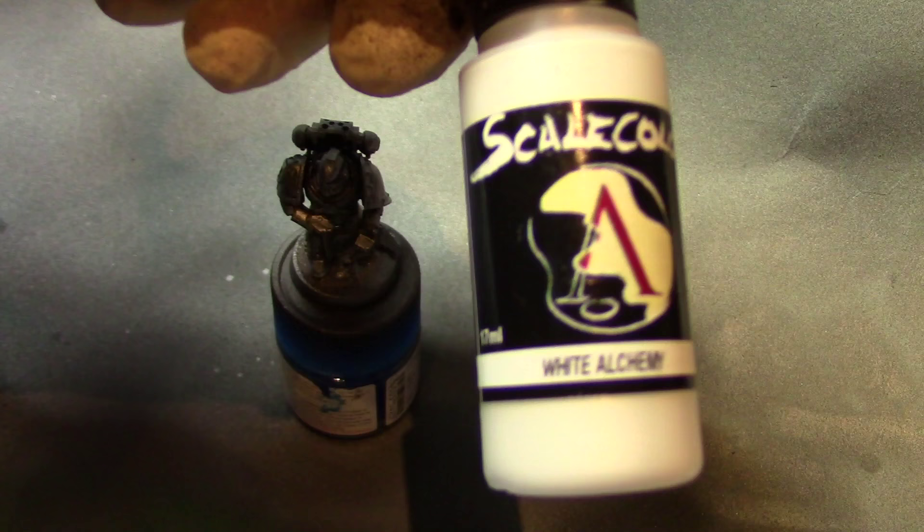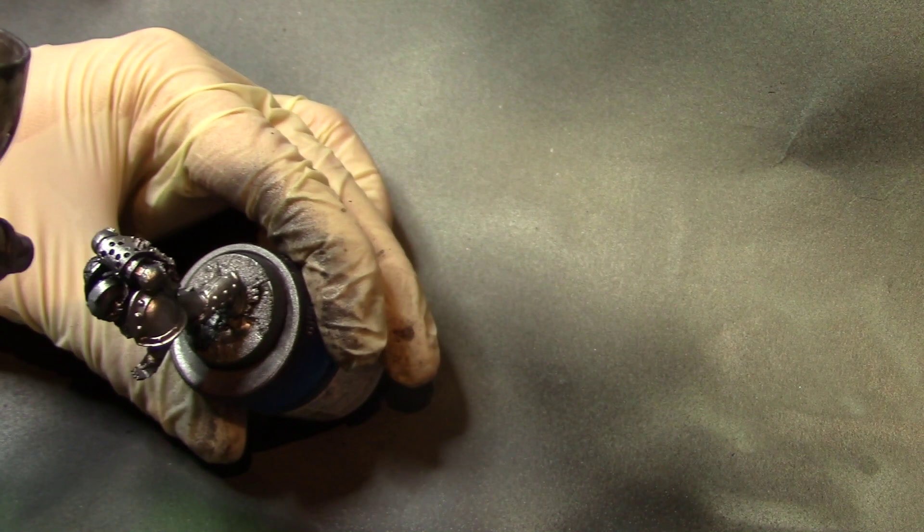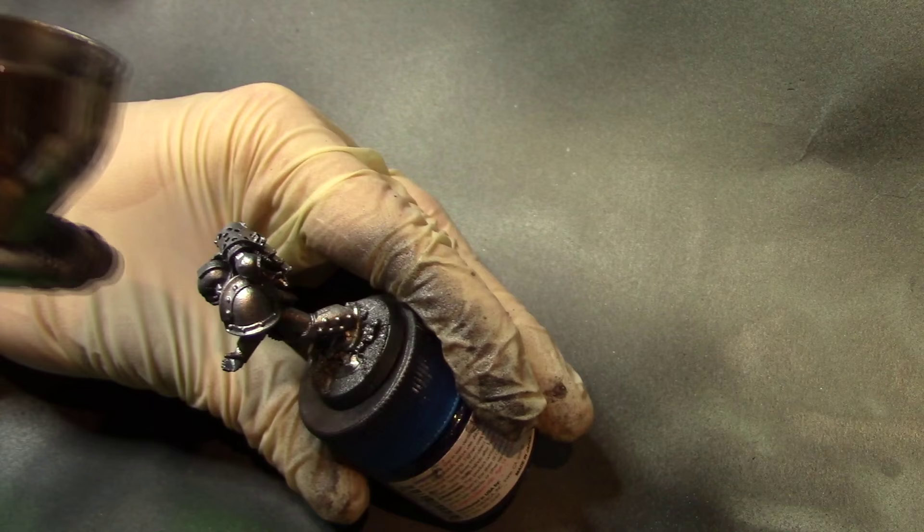Then we're going to come in with Scale 75's White Alchemy and this is going to be very sparingly applied, pretty much top down, early spray just focusing on specific areas. And this will give us our base coat.